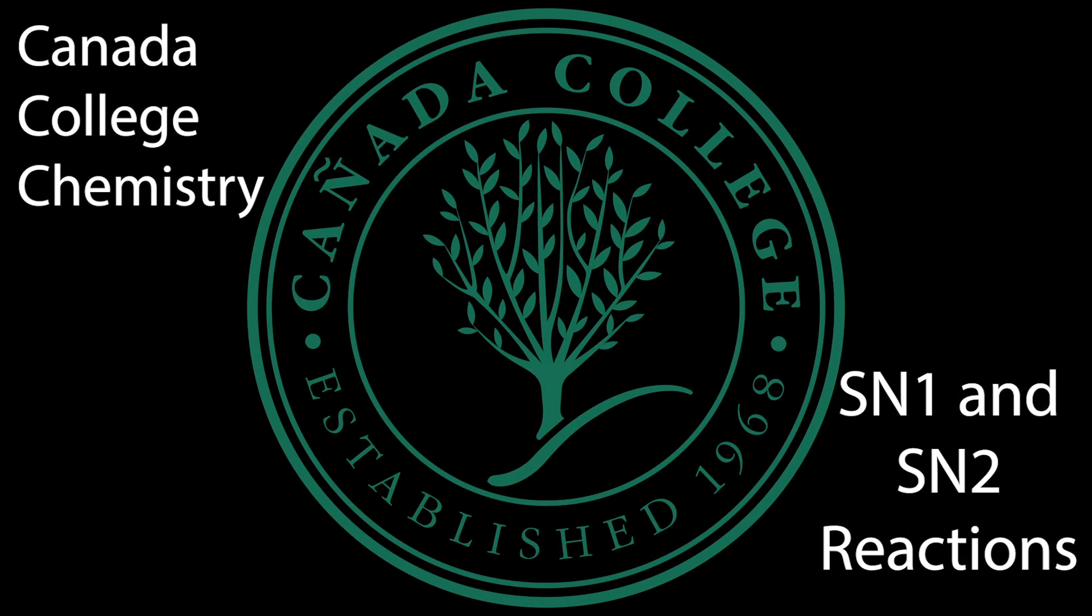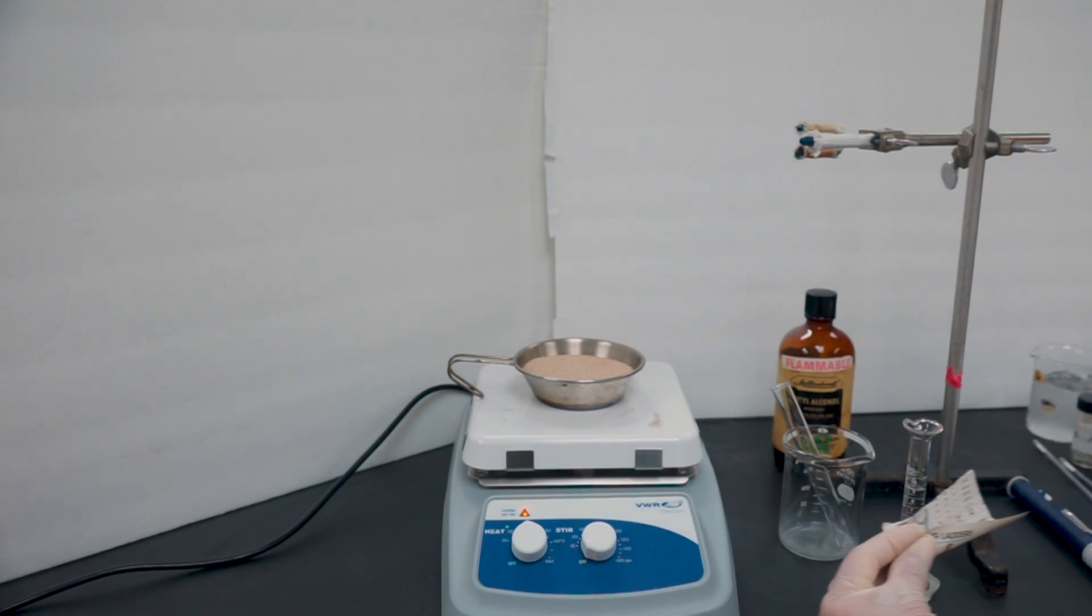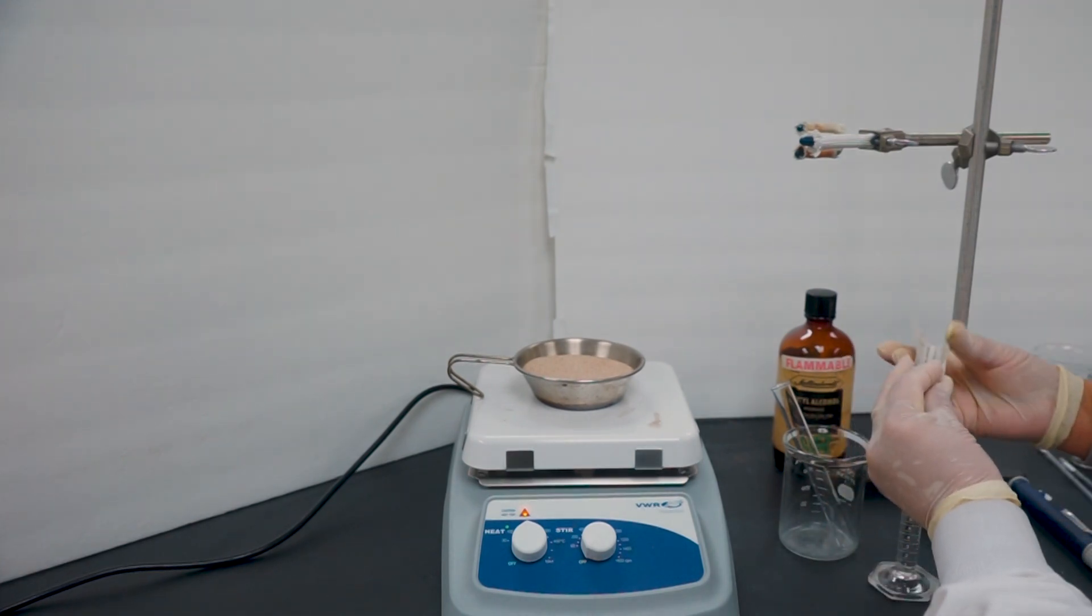SN1 and SN2 Reactions. SN2 Synthesis of 1-Bromobutane. This is a nucleophilic substitution reaction between butyl alcohol and sodium bromide.